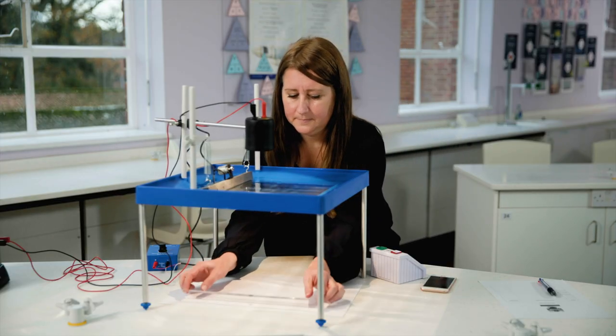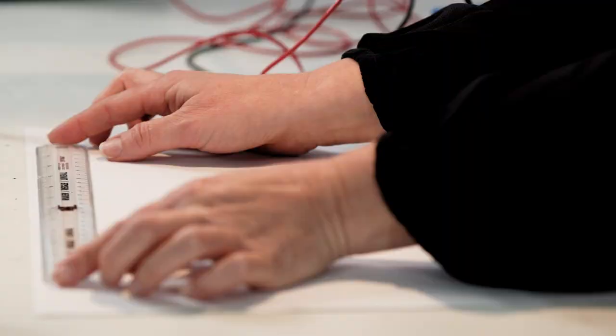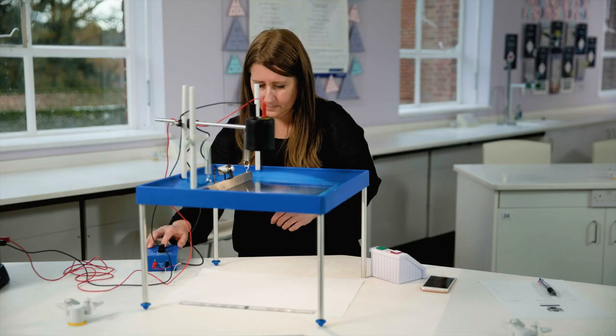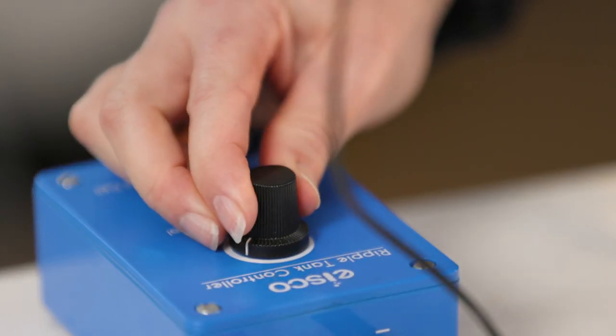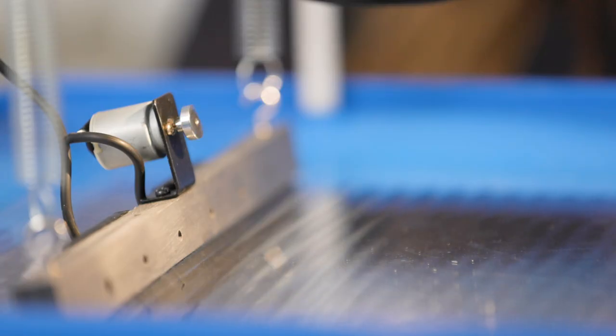Next, place a ruler to one of the long sides of the paper below the ripple tank so you can see the markings. This is so you can easily measure the waves. Then you will need to vary the current to the motor. You will know when it's set to the correct current as the waves will be easy to count.